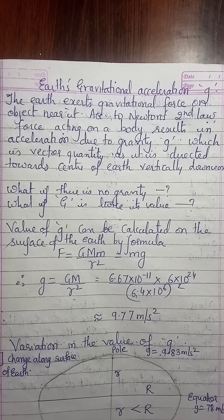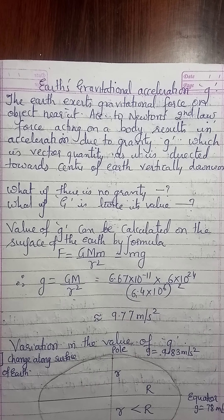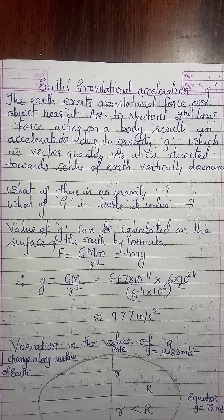If capital G, that is the universal gravitational constant, is doubled, the force of attraction between two objects will also be doubled.